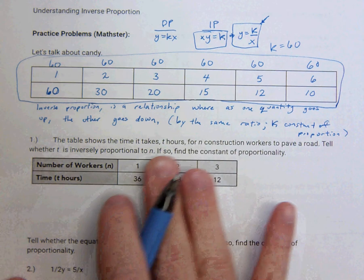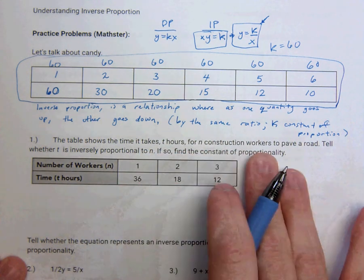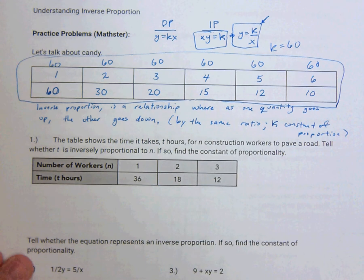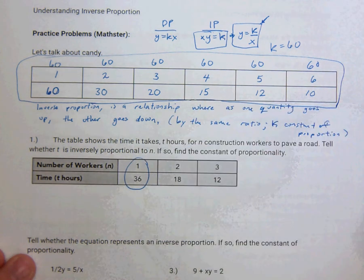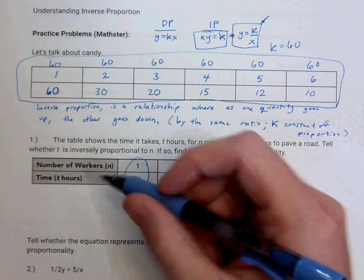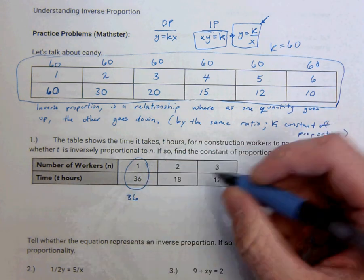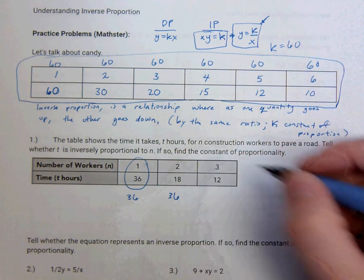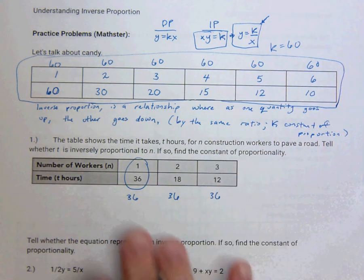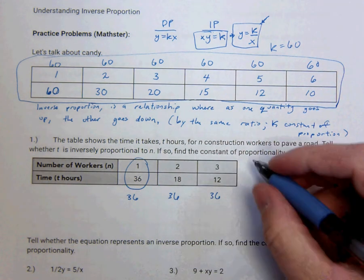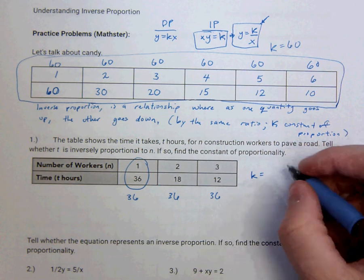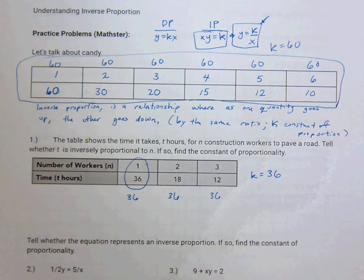The table shows the time it takes T-hours for n-construction workers to pave the road. Tell whether T is inversely proportional to N. If so, find the constant of proportionality. So remember, to do this, we're going to have to take these two numbers. Instead of dividing 36 by 1, which is 36, 18 by 2, that's 9, they're not direct proportion. We multiply 1 times 36, well that's 36. 2 times 18, well that's 36. 3 times 12, well that's 36. So it is inversely proportional, because when we multiply these numbers, they all equal 36. So the k, the constant of proportionality, is 36.